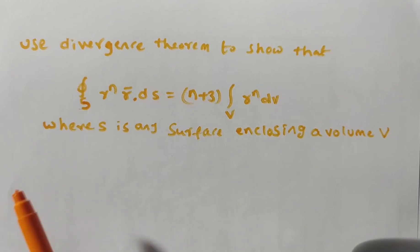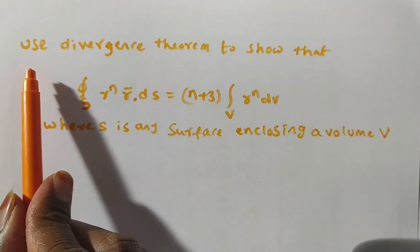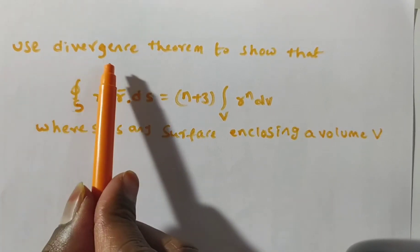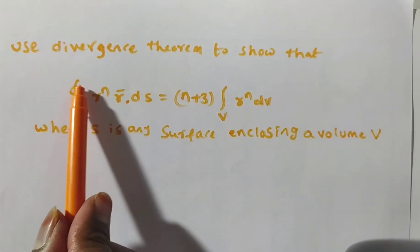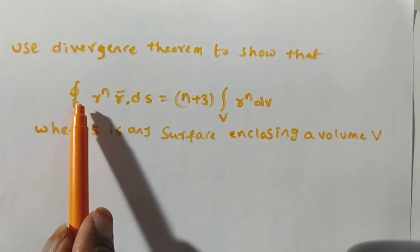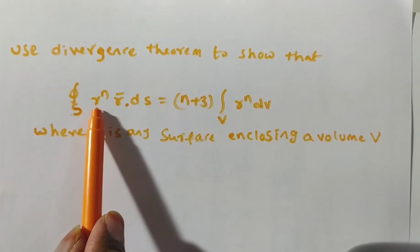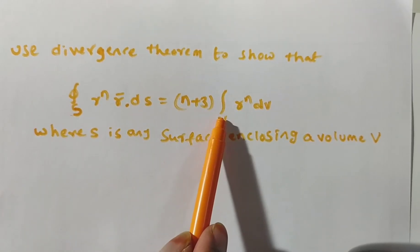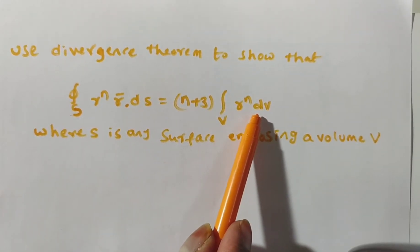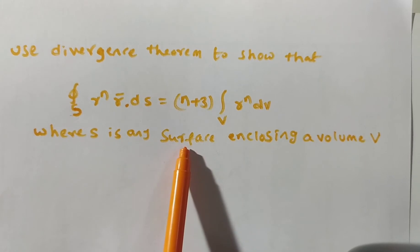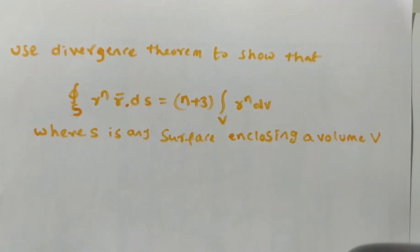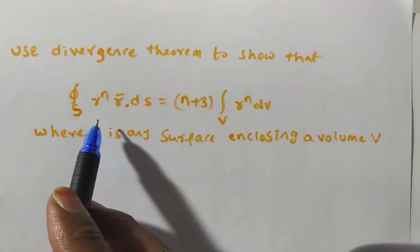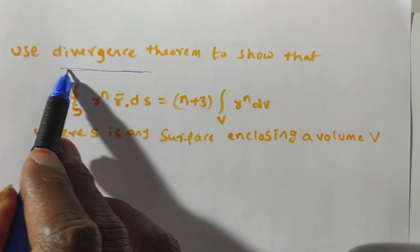Hi friends, now we are solving a problem on the Divergence Theorem. The given problem is: use the Divergence Theorem to show that the integral over closed surface S of r^n · r̄ · dS is equal to (n+3) times the integral over volume V of r^n dV, where S is any surface enclosing a volume V.